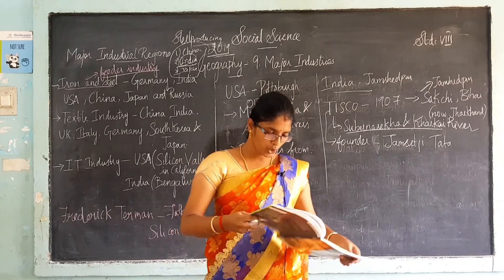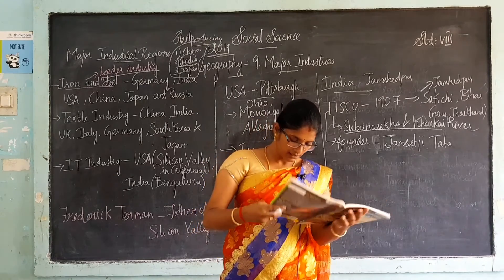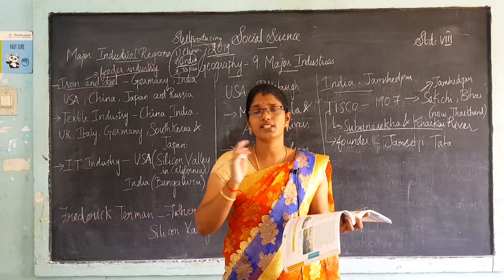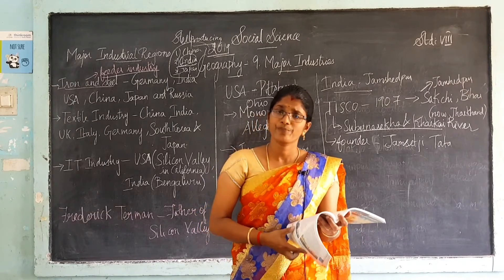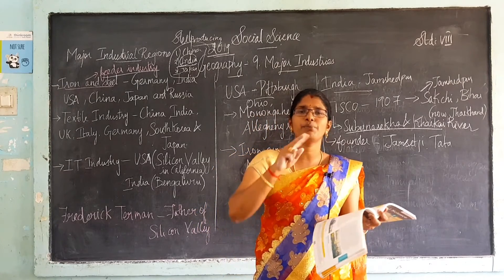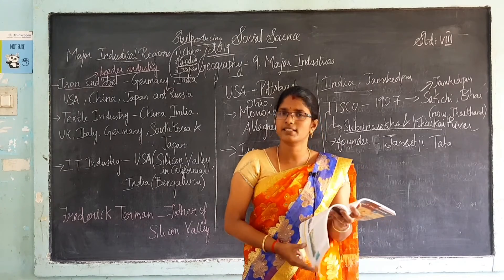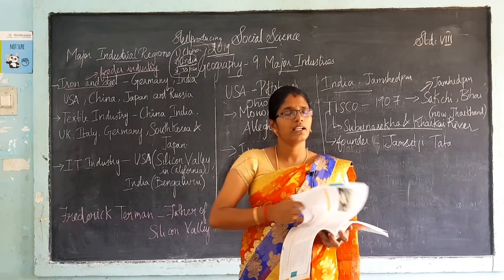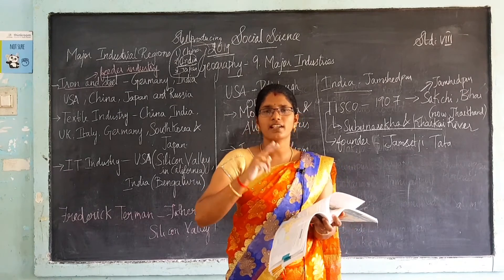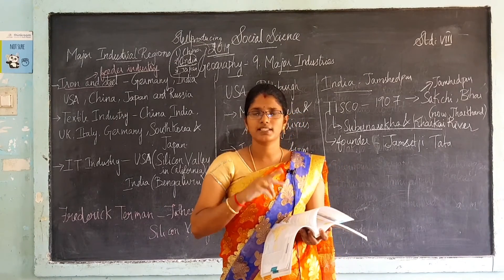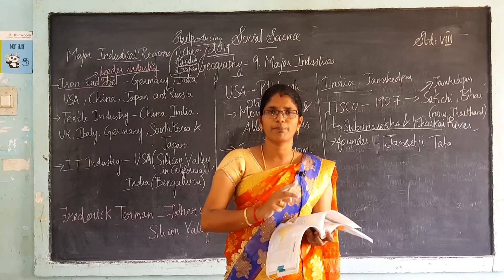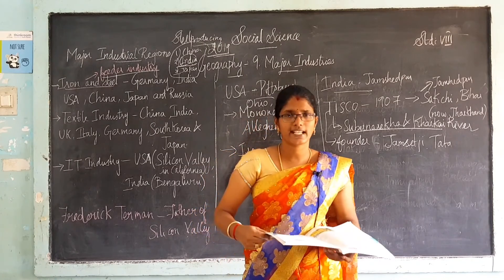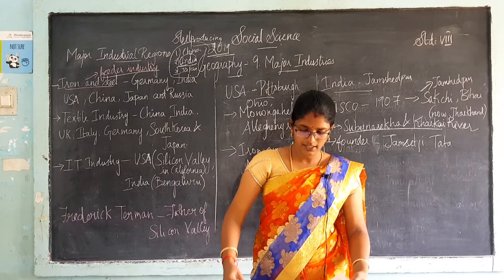These two steel plants — Jamshedpur and Pittsburgh — are very famous steel plants in the world. In the next class, we will see where textile industries are manufactured, which are the major regions, and we will compare similar regions in various countries. We are also going to see IT industries in the next class. Thank you, students.